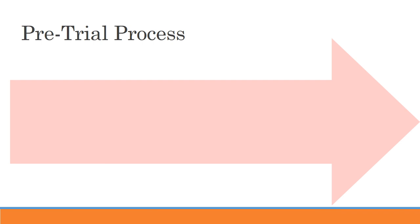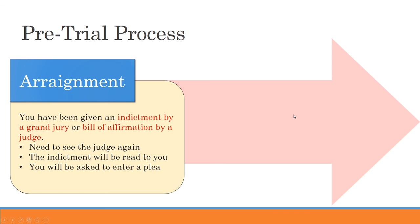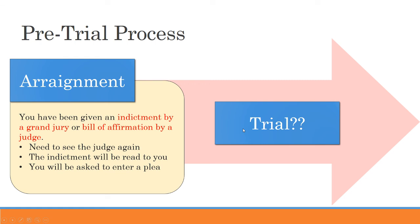Let's say the grand jury found probable cause to believe you committed a crime and gave you an indictment. Then you move to the next stage of the process: the arraignment. The arraignment is another meeting with the judge — you're going to see the judge one more time, and the judge is going to read to you the charges, the indictment. These are the formal charges. The judge will also ask you to enter a plea, and of course you're going to plead not guilty. Then, we go to the trial — or do we?